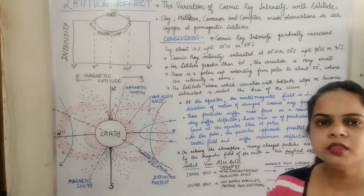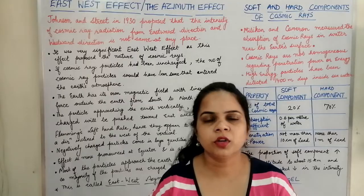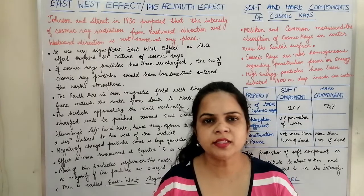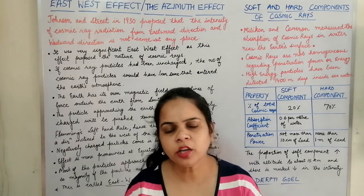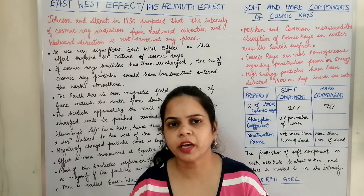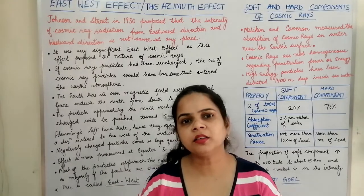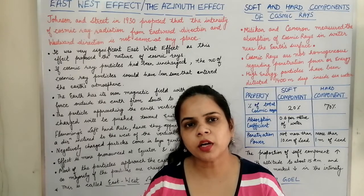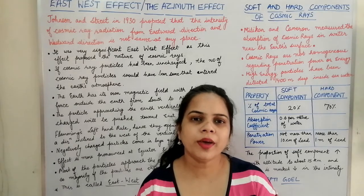Next we will study the east-west direction effect, also called the azimuth effect. In the east-west direction effect, it is seen that the number of cosmic ray particles is not equal whether measured from the east direction or from the west direction.